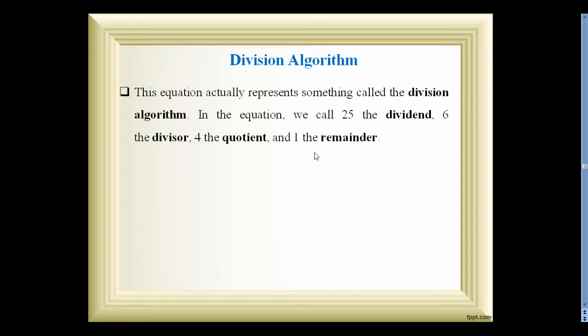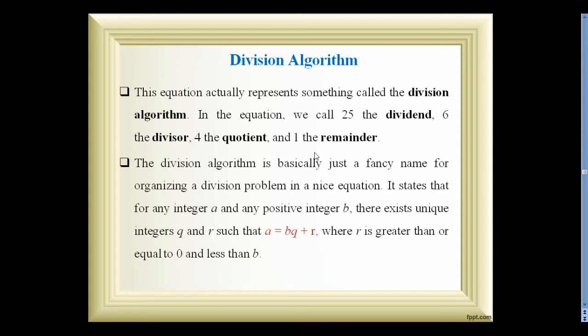We call 25 the dividend, 6 the divisor, 4 the quotient, and 1 the remainder. The division algorithm is just a fancy name for organizing a division problem. We write this equation by taking a as an integer, b as a positive integer; there exist unique integers q and r such that a = bq + r, where r is greater than or equal to 0 and less than b. This is essentially the Euclidean algorithm.